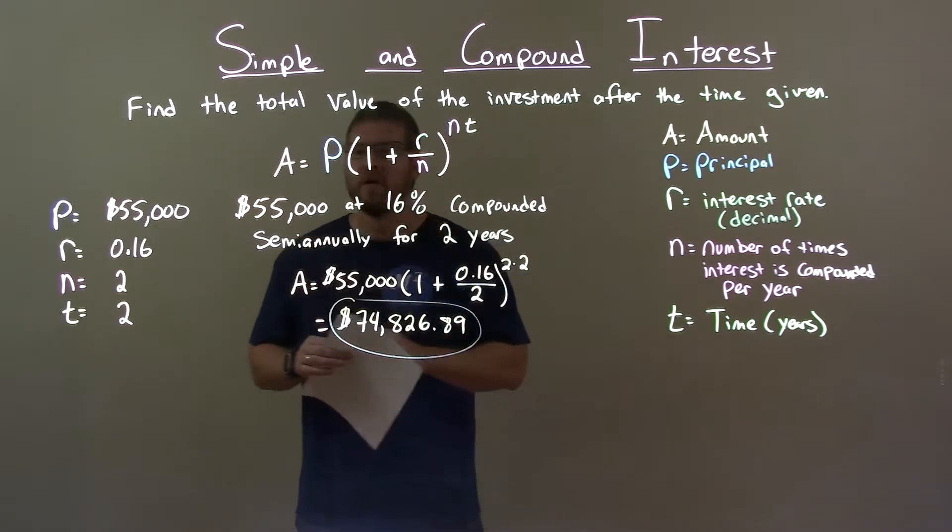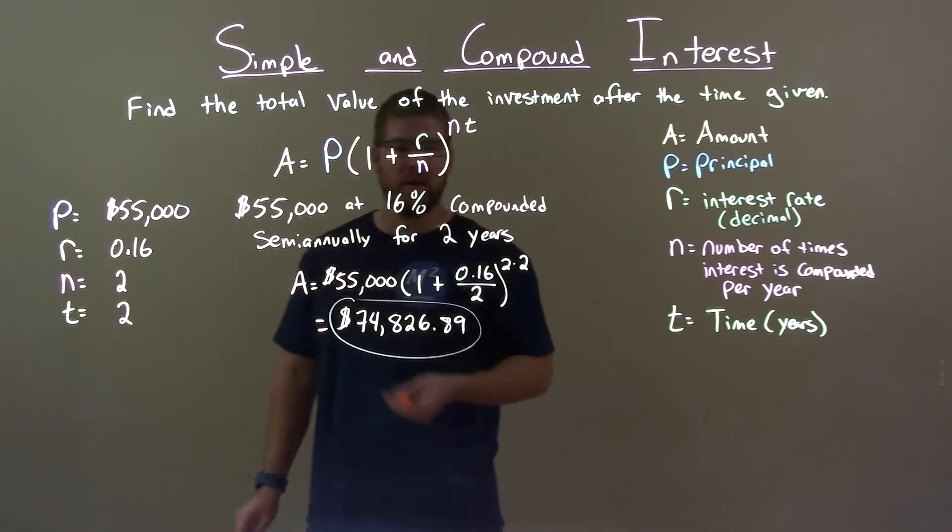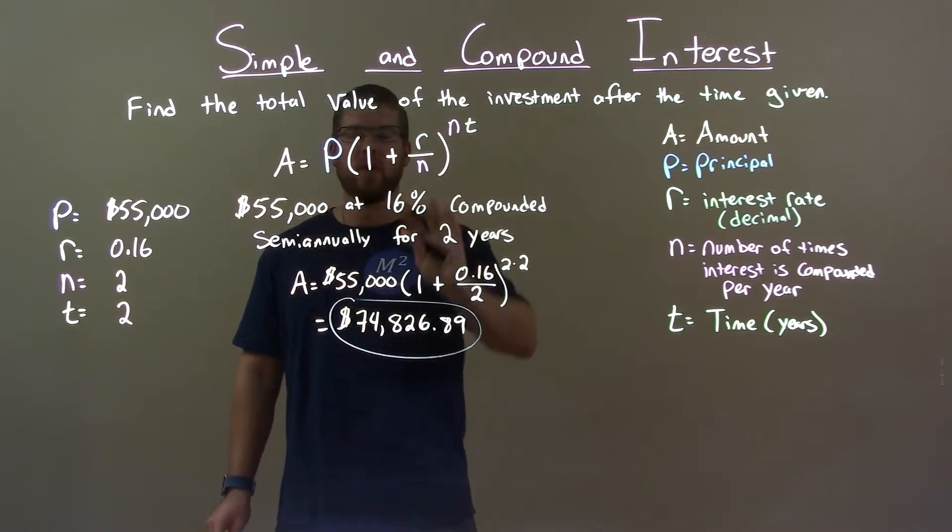Quick recap, we're given $55,000 at 16% compounded semi-annually for two years.